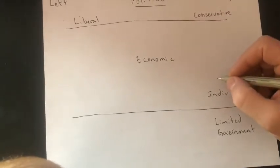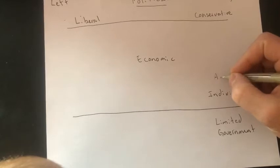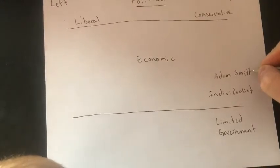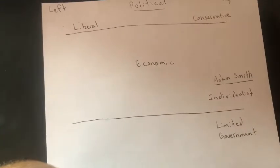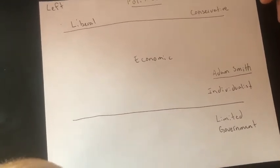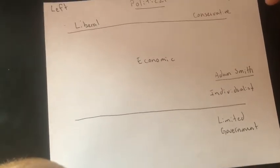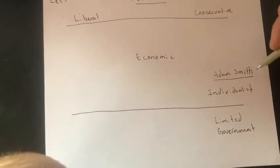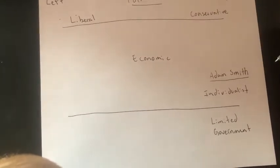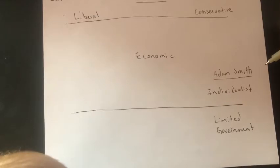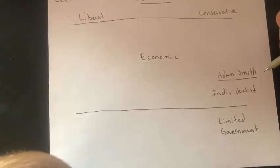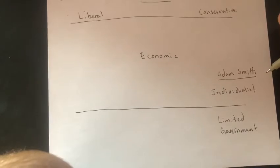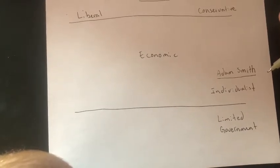This came from a famous philosopher by the name of Adam Smith. Essentially what Adam Smith said — and you guys are going to need to know a lot about him — is that when we act in our own self-interest, we aren't necessarily trying to help other people out. But when we try to do our very best and act in our own interest, we end up inadvertently — meaning not on purpose — benefiting everybody else.